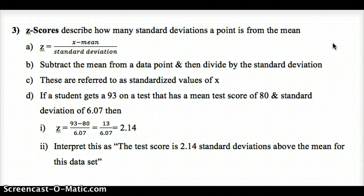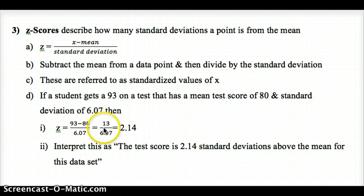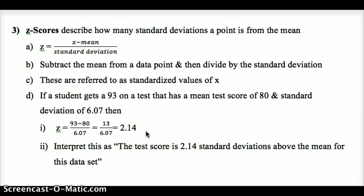Let's do an example. If a student gets a 93% on a test and the average is 80 with a standard deviation of 6.07, we subtract the mean from the score — that's 13 — and divide by the standard deviation. That means this student's score is 2.14 standard deviations above the mean: a very strong score, far above the mean. We're going to see how z-scores relate to the area under the curve and what percent of data falls to the left of z = 2.14.